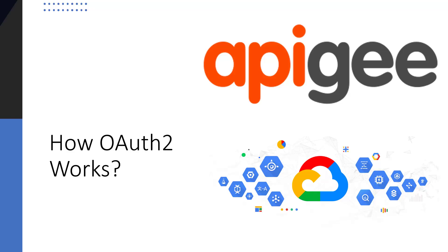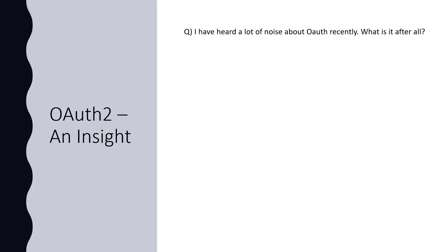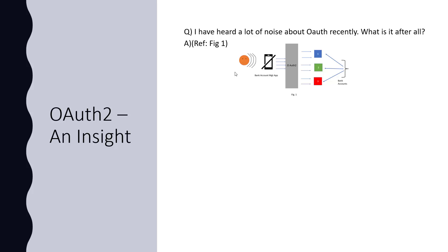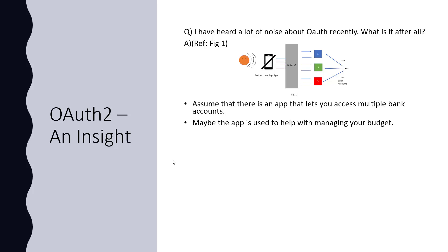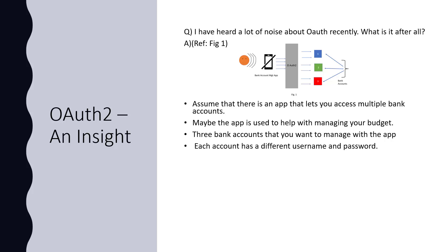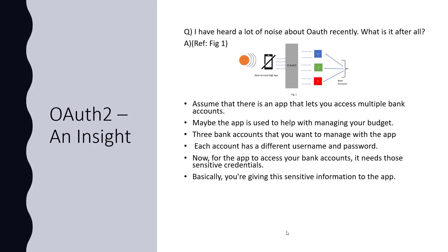We have heard a lot of noise about OAuth recently, so in your mind it could be a question: after all, what is it? Let's answer this by referring to figure one. Assume that there is an app that lets you access multiple bank accounts — say two or three. The app is used to help with managing your budget. You have three bank accounts, and the same app is managing all of them, and each account has a different username and password. For the app to access your bank accounts, it needs those sensitive credentials like username and password — basically you are giving this sensitive information to the app.